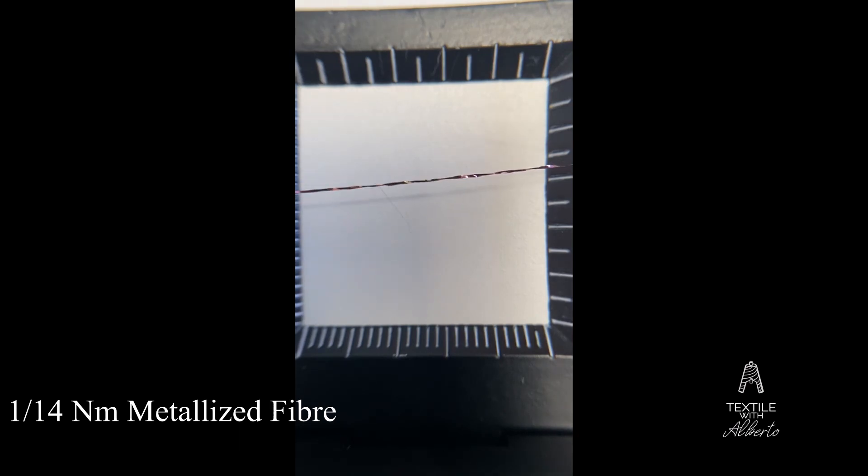As I stated in a previous video, twisting is performed to give better mechanical properties to the yarn but also for visual effects. Like in this case, metallized fiber. I can separate the plies and I can separate the lacquering, the metal, from the core yarn.